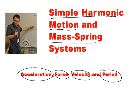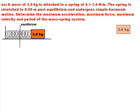So here's an example of a question from this unit of study in the Physics 20 curriculum. A mass of 3 kilograms is attached to a spring. Spring constant is 1.4 newtons per meter. The spring is stretched to 0.5 meters past equilibrium and undergoes simple harmonic motion. It's going to vibrate back and forth, kind of like this. I've got my little ghost block there to show that. Determine the maximum acceleration, maximum force, maximum velocity, and the period of the mass-spring system.